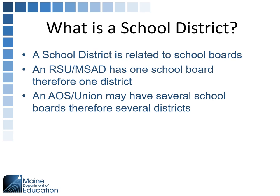What is a school district? A school district is related to the number of school boards. An RSU or an MSAD has one school board — it's a group of towns creating one school district. So RSU 10, RSU 11 — Gardner has kids from West Gardner, South Gardner, Randolph, Pittston; they're all RSU 11 with one school board. An AOS, Alternative Operating System, or Union — each of the schools within that AOS or Union has its own school board, and therefore they are their own district.